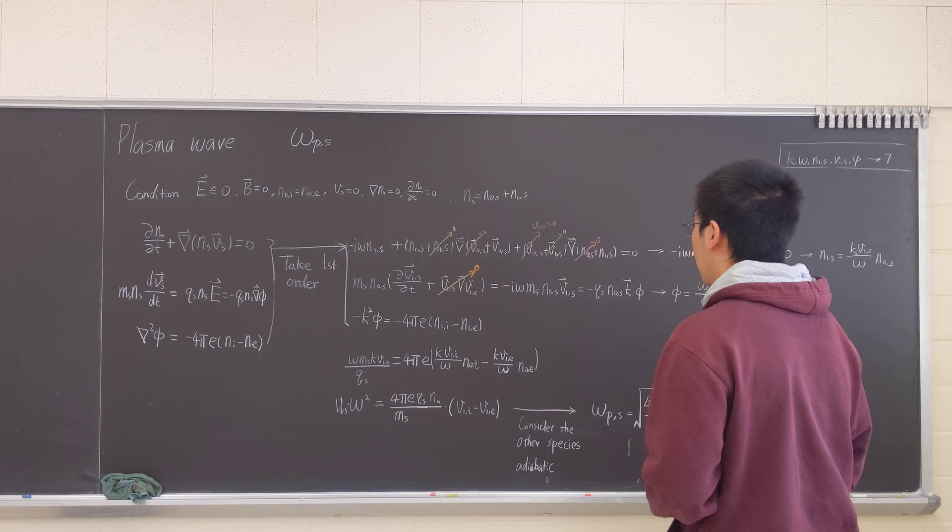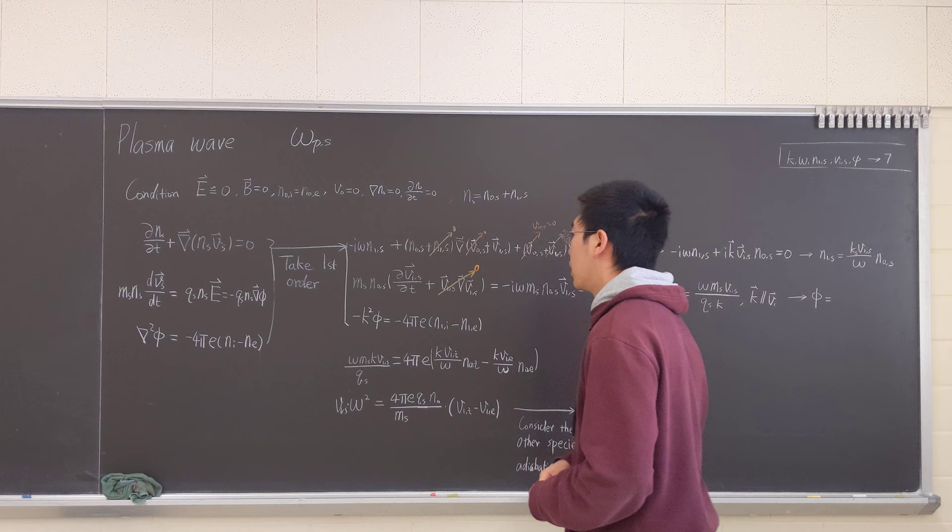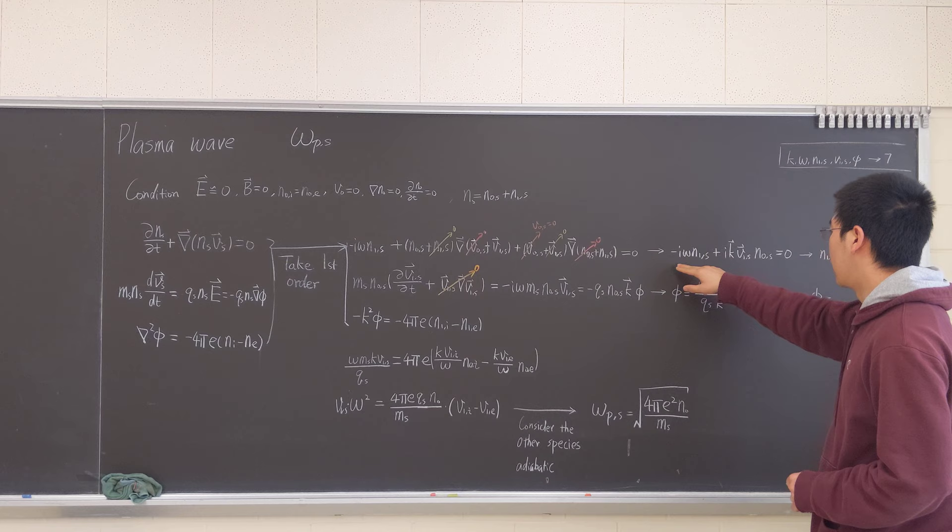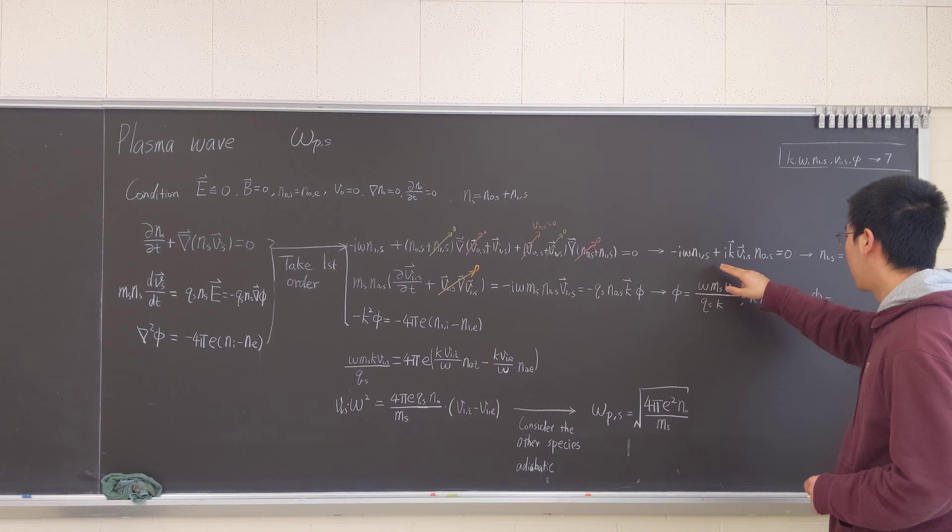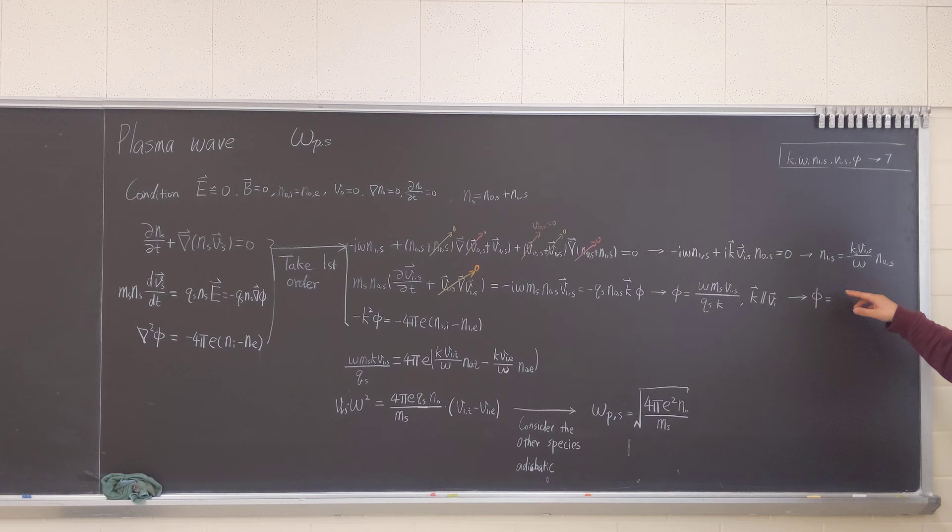So we're left with only one term for the continuity equation. So we want to have negative i omega N1 plus iK V1 equals zero.